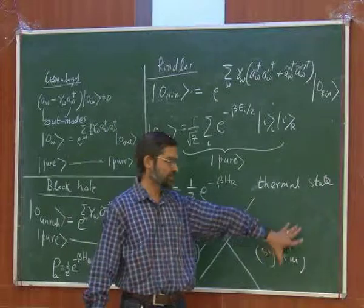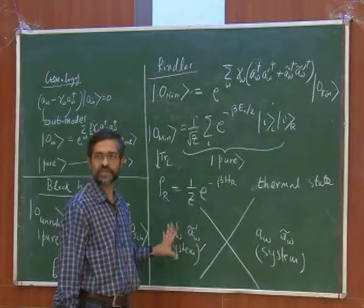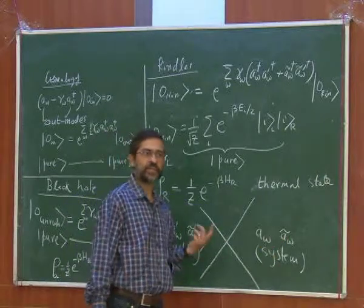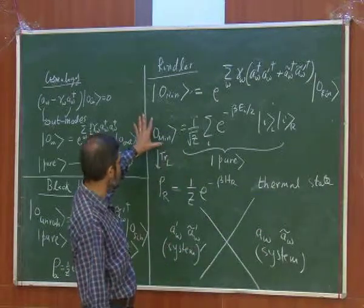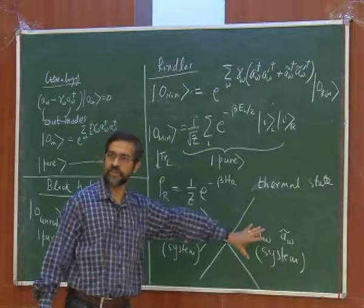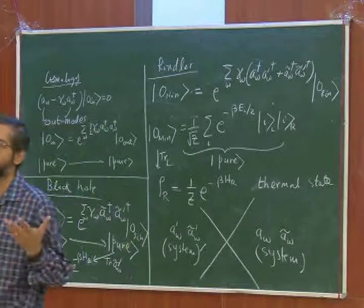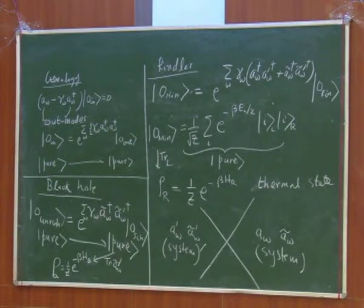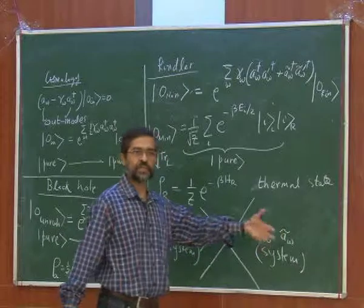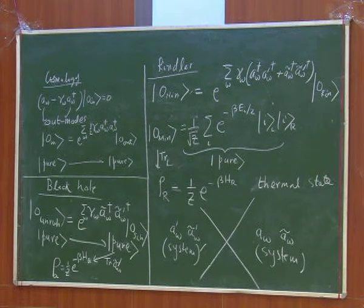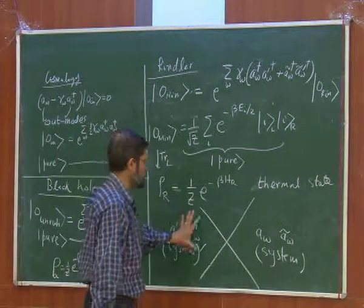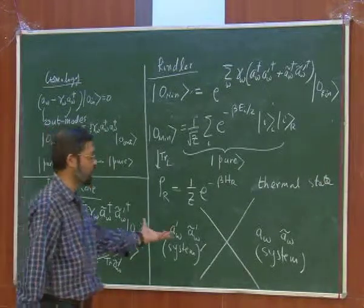Let us say this is a system and this is a system prime. You invent a second system and couple it in an entangled way such that this thermal state can be obtained by tracing a pure state density matrix built out of both systems. This was the device used by Takahashi and Umezawa — that is where they introduced the notion of the thermal field double. It is like a system and a bath; in system-bath models, a thermal bath can be understood from a pure state in a larger system. This second system turns out to be an identical system in this case.